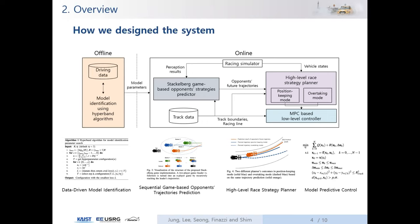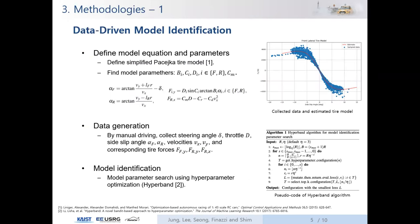Let me introduce the data-driven model identification. In high-speed racing, since the non-linearity of vehicle dynamics is dominant, accurate dynamics model identification is required for an optimized driving command. We found our optimized model parameters from a collected dataset by hyperparameter optimization scheme. We defined a simplified Pacejka model as the tire model and collected the side slip angle, shear angle, throttle, velocities, and tire forces as input and label data. The model parameters can be searched by Hyperband, and we defined a root-mean-square error between inferred and labeled tire forces as an evaluation loss.